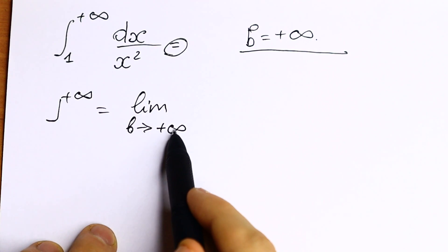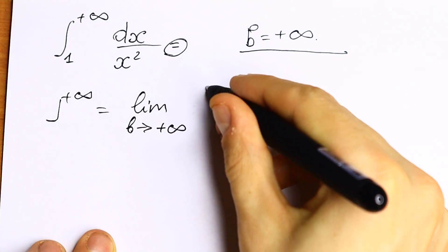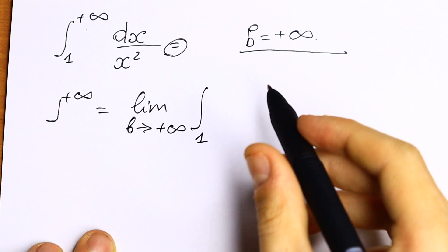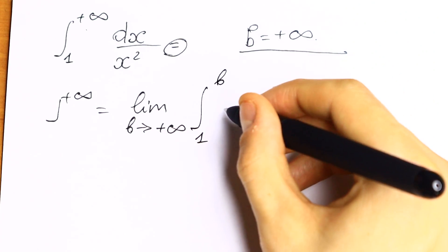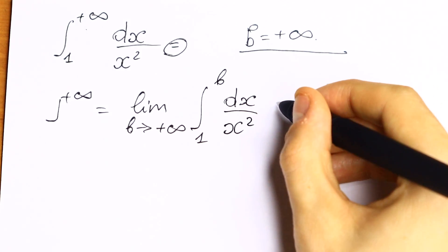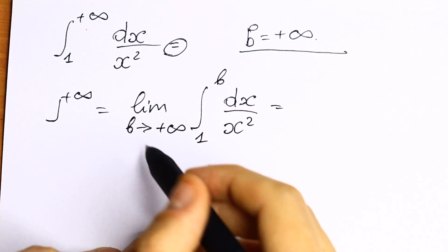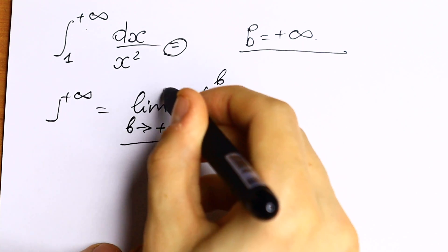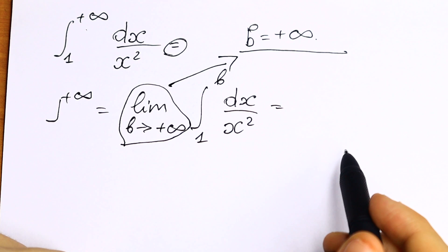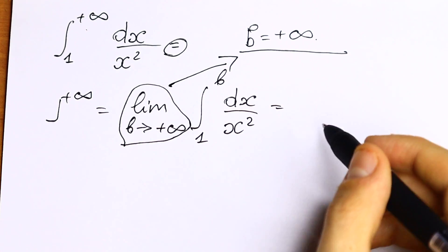As you can see, b approaches plus infinity, then our integral will be from 1, not to plus infinity, but to b. And as you can see, our function is dx over x squared. So we write our limit and our substitution. These are two things you need to know. What are we going to do next?